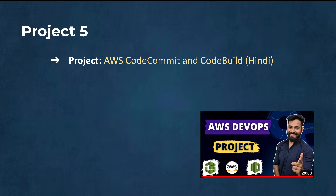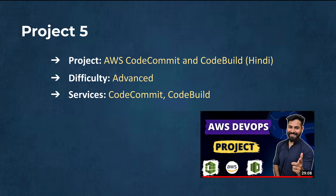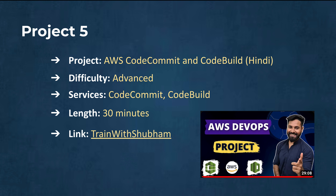Moving on to Project 5, this project is about AWS CodeCommit and CodeBuild. It's in Hindi rather than English, but the reason I'm recommending it is that it really helps you understand CI/CD and more AWS DevOps services. It's geared toward advanced users who want to enhance their AWS DevOps skills. You will work with CodeCommit and CodeBuild to set up a complete CI/CD pipeline — covering code version control, automated testing, and deployment — making it a valuable addition to your resume. The level is advanced and the video is 30 minutes long, from the Train with Shubham channel.